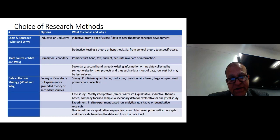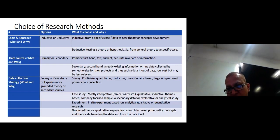And then is data collection strategy. So how are you collecting data? Survey, case studies, experiment, grounded theory, or secondary sources? Survey is used under positivism, quantitative, deductive, questionnaire-based, large sample-based, primary data collections method. Case studies, mostly interpretive, which could be really positivism but mostly interpretive, qualitative, inductive. And then there's a theme-based company, for example secondary data of experts or analytical study. Experiments are usually in-situation, experiments are created for analyzing cause and effect, either qualitative or quantitative research.